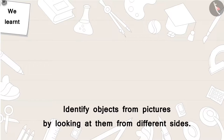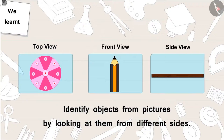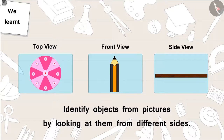In this video, with the help of some interesting examples, we learned to identify objects from pictures by looking at them from different sides. In the next video, we will see some misconceptions about looking at objects from different sides.